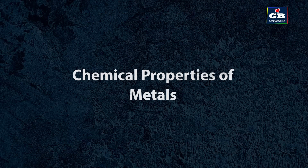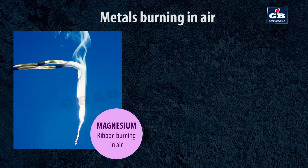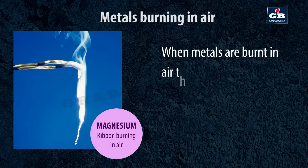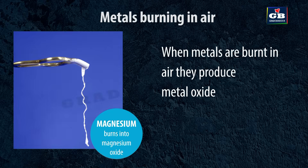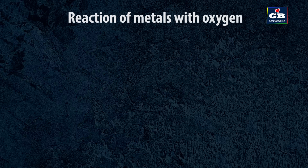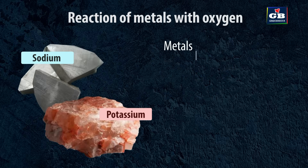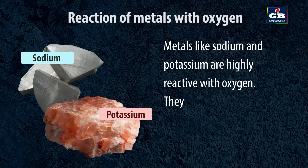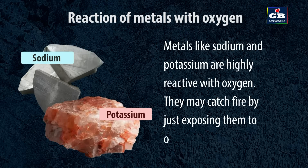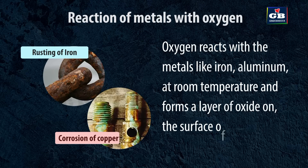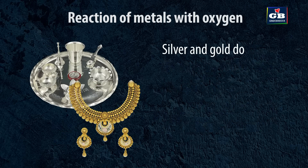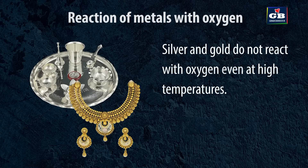Chemical properties of metals. Metals burning in air: when metals are burnt in air, they produce metal oxide. For example, when magnesium is burnt in air, it produces magnesium oxide. Reaction of metals with oxygen: metals like sodium and potassium are highly reactive with oxygen and may even catch fire just by being exposed to oxygen in moist air. Oxygen reacts with metals like iron and aluminium at room temperature and forms a layer of oxide on their surface. Silver and gold do not react with oxygen even at high temperatures.